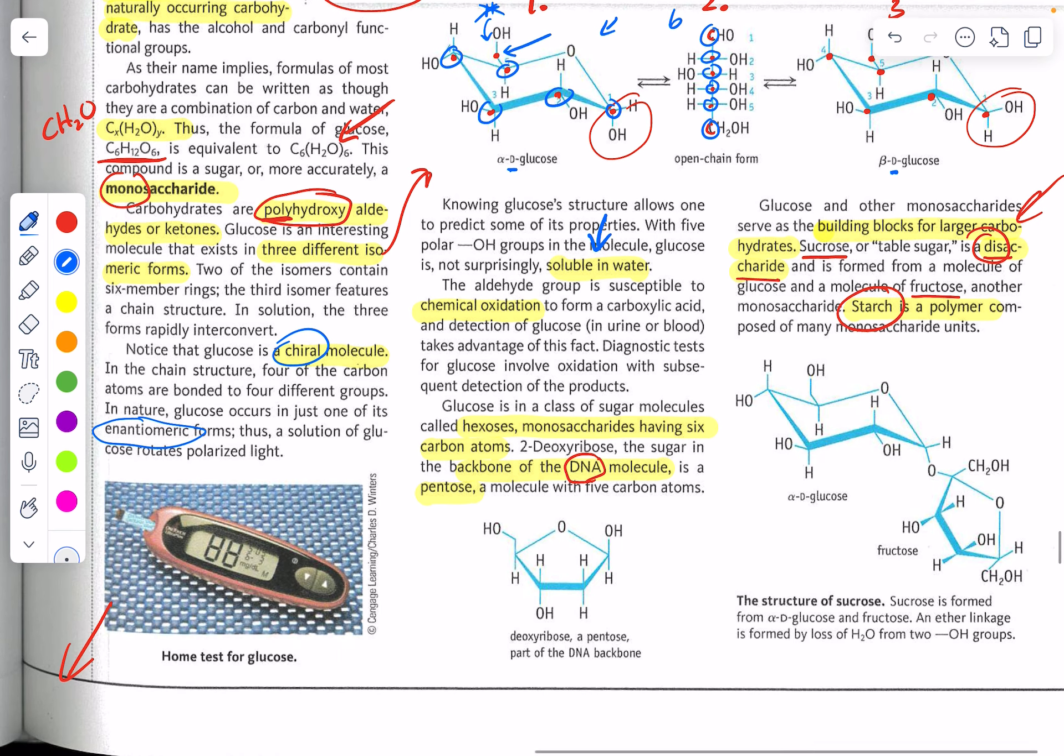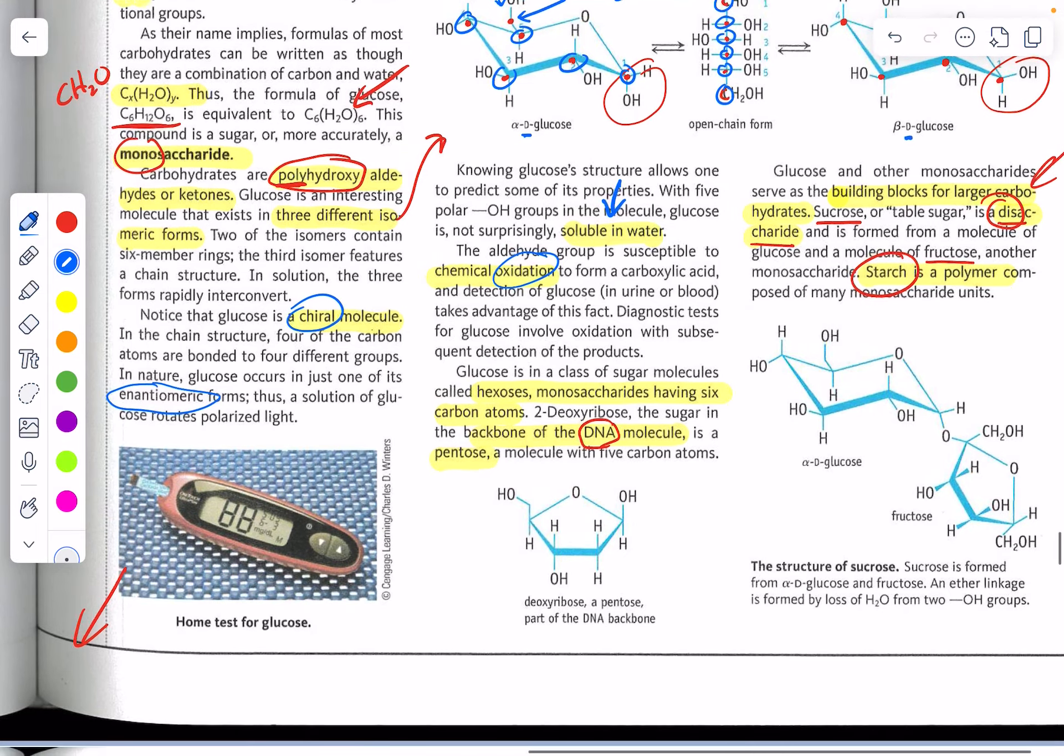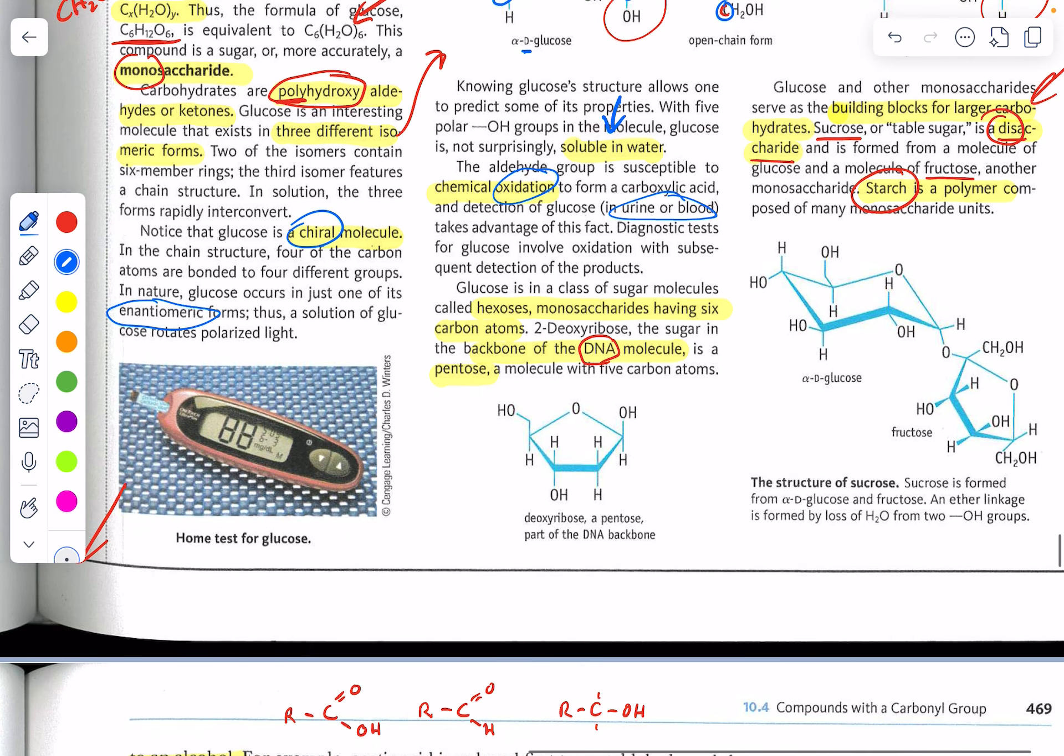All right, moving right along. We know that sugars can undergo oxidation. And we know how important it is to test for sugar in the urine or blood when we talk about having too much or too little sugar. Hyperglycemic or hypoglycemic. Diabetes. The six-carbon sugar is called a hexose because sugars end in O-S-E.